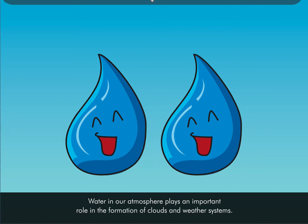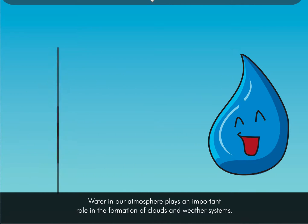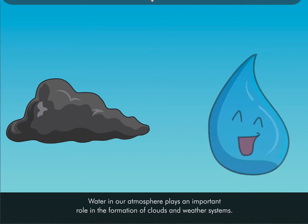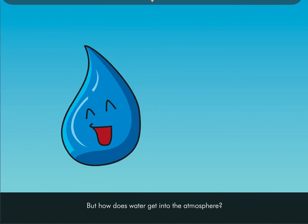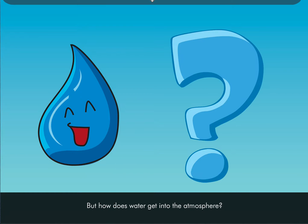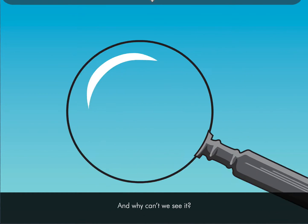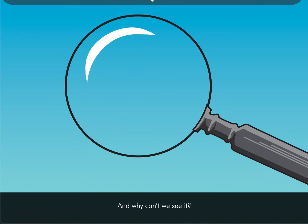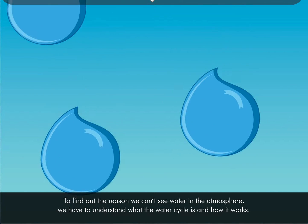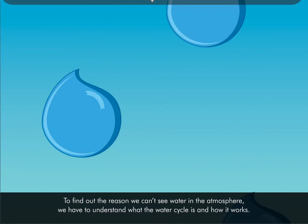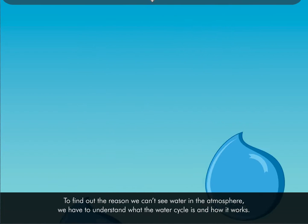Our atmosphere plays an important role in the formation of clouds and weather systems. But how does water get into the atmosphere, and why can't we see it? To find out the reason, we have to understand what the water cycle is and how it works.